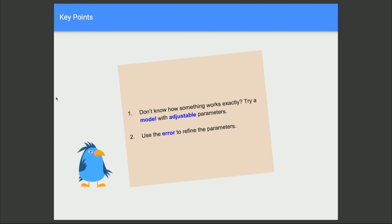The key points: if we don't know how something really works and haven't got an exact mathematical model, we can invent a model we think might be true, try it, and have parameters we can adjust. The important point is that the error is used to refine the model.